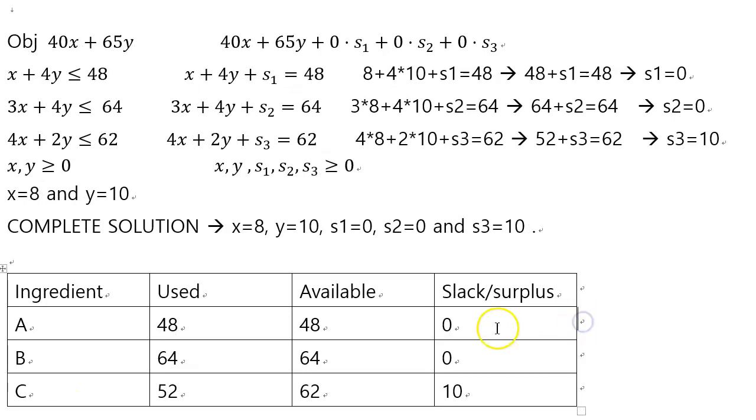Now, when you get 0 slack or 0 surplus, that ingredient or that constraint is called the binding constraint. So this one here will be called a binding constraint. Whereas this constraint, ingredient B, will be, well, that's also binding because it's 0.